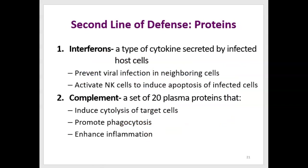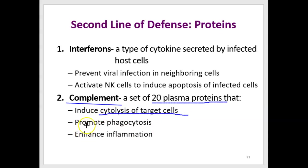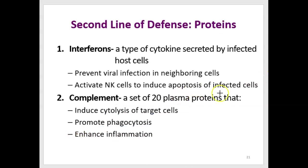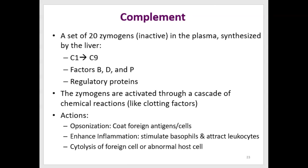The second set of proteins in our second line of defense are a group of 20 plasma proteins in the blood called complement. Complement can act directly to break apart target cells — called cytolysis. It can also promote phagocytosis by neutrophils and macrophages, and enhance inflammation. These 20 proteins are zymogens — inactive proteins made by the liver — with names like C1 through C9, factors B, D, and P, plus regulatory proteins. They become activated through a cascade of chemical reactions, similar to clotting factors.